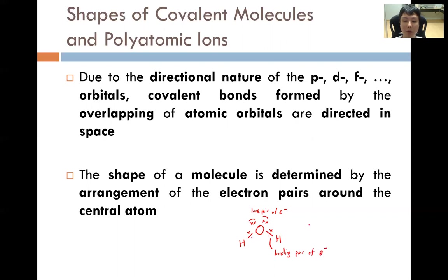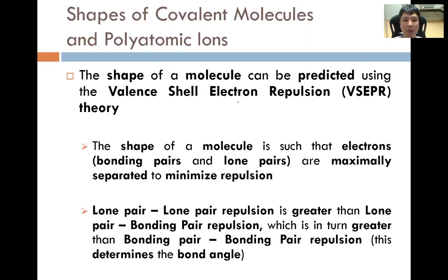The number of bond pairs and lone pairs will determine how the electrons are arranged around the central atom, which will eventually determine the overall shape of the molecule. The theory used to predict the shape is called the valence shell electron pair repulsion theory — VSEPR theory. We arrange the electrons around the central atom such that the electrons are maximally separated, because electrons are all negatively charged and repel one another, minimizing repulsion and achieving greater stability.